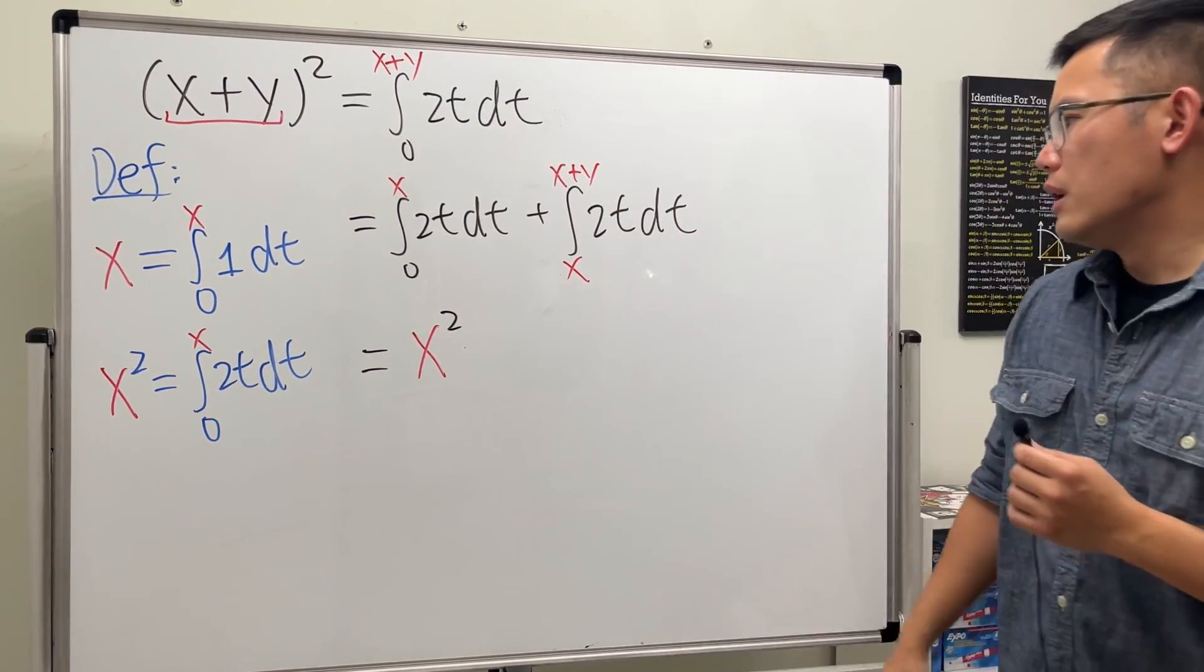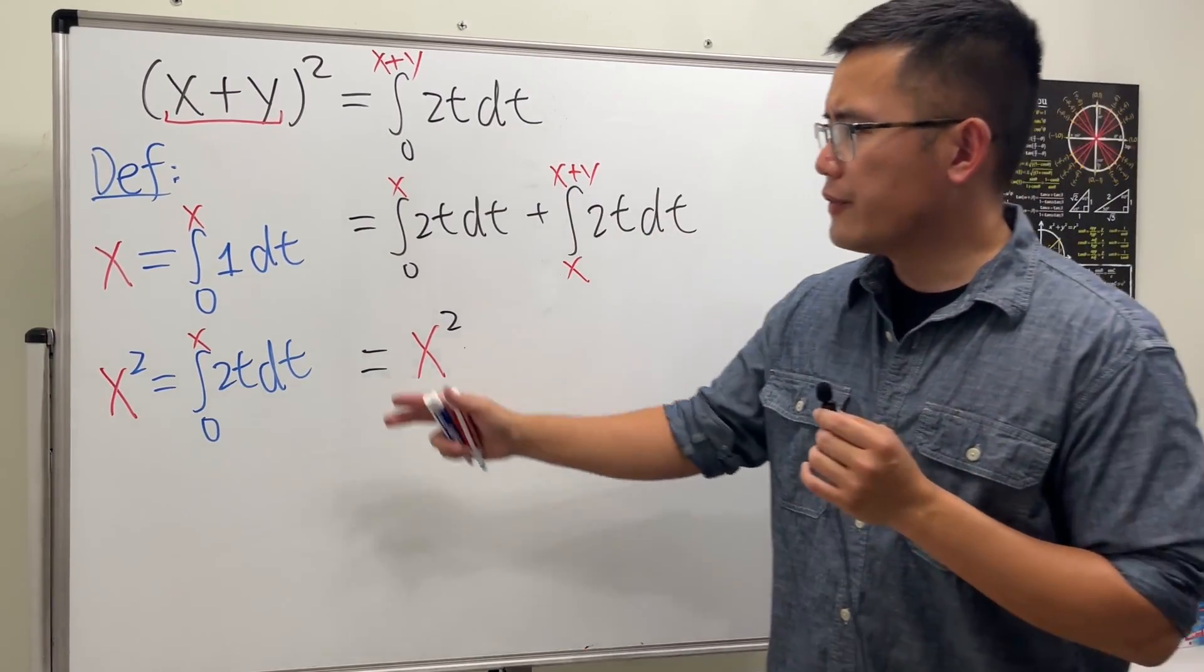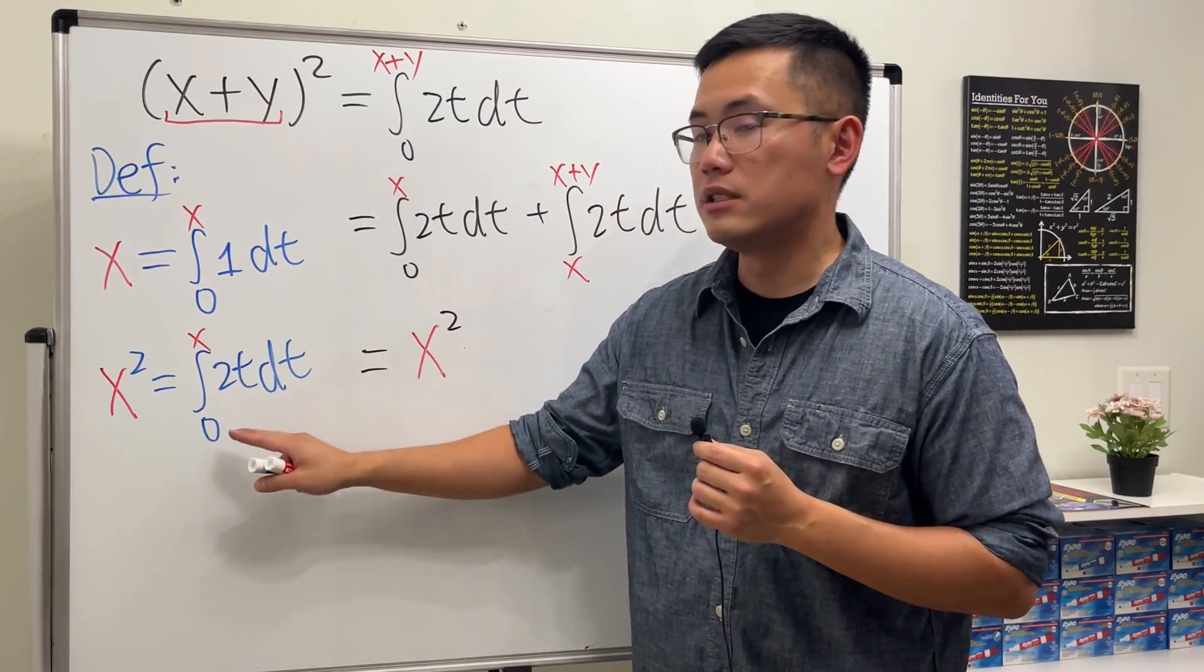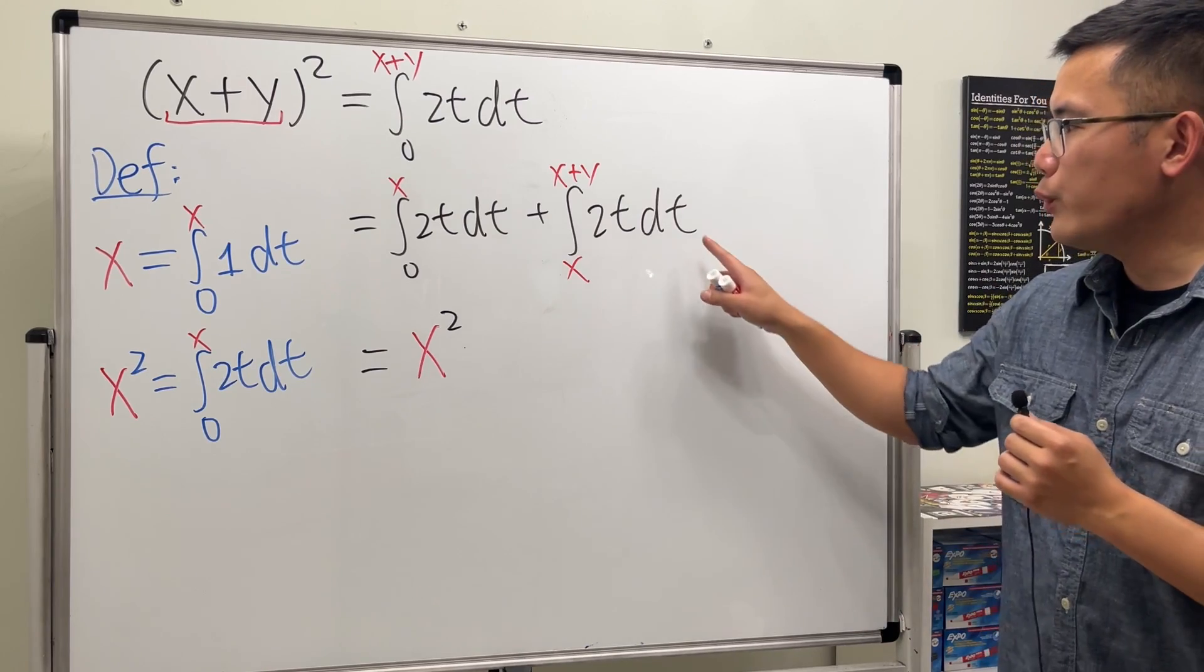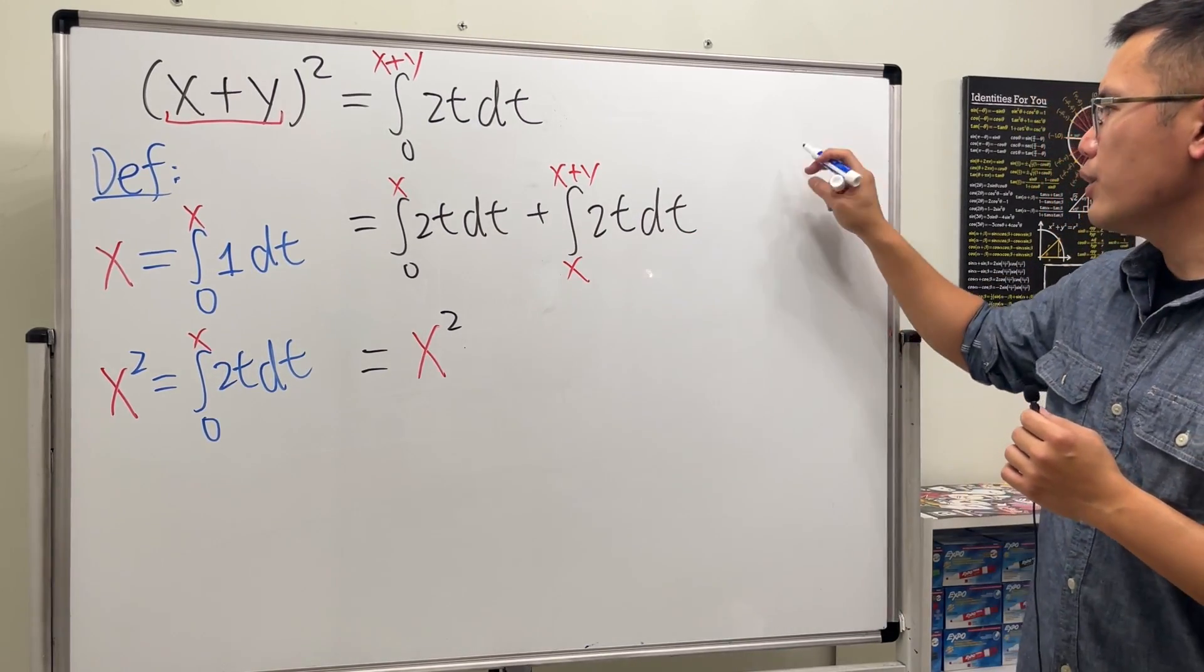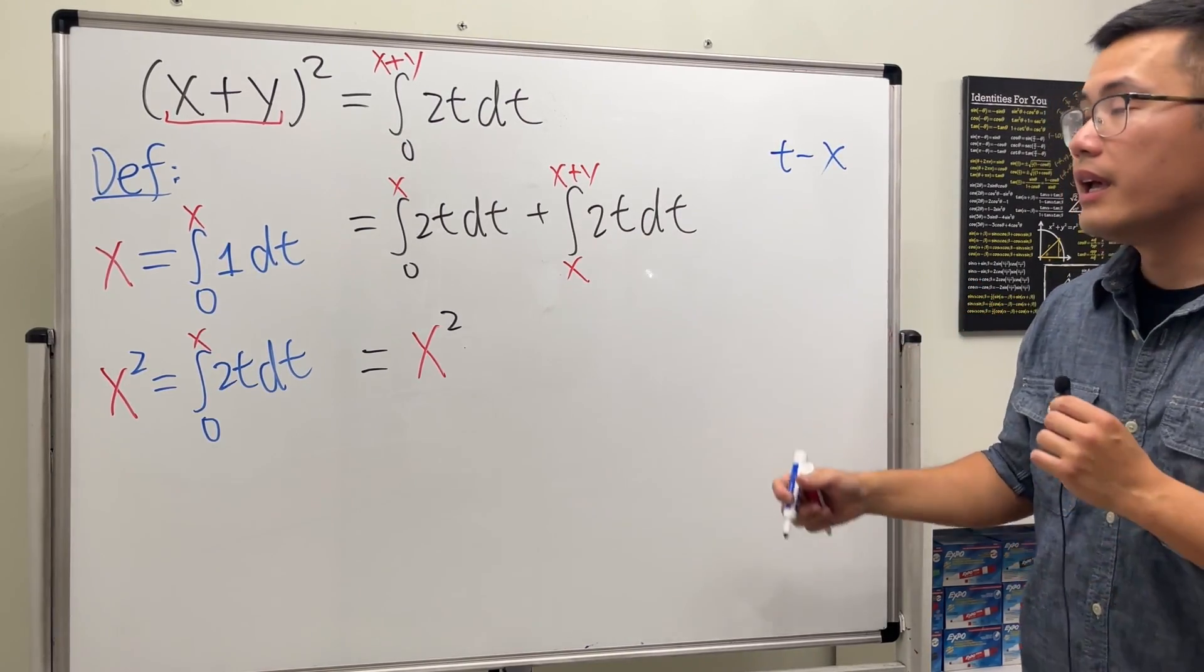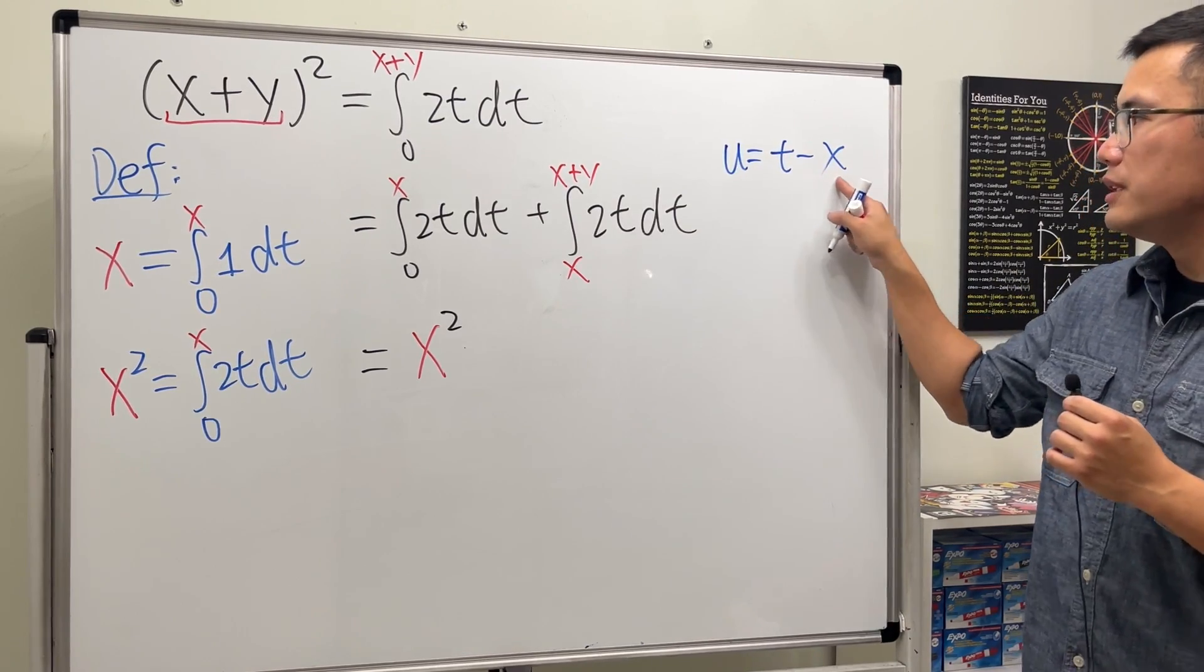But now what is this though? As we can see, this integral starts with x. We don't want that, because in order for us to use these two definitions, we will have to make sure the integral starts with zero. So right here let's just do some substitution. And keep in mind we are in the t world and we have the x right here, so let's just go ahead and have t minus x, so we can get a zero. And let's call this to be a new variable, that's a u.